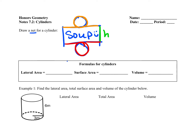The nice thing about cylinders is that they have all the same formulas as prisms. The lateral area for a cylinder is perimeter of the base times the height. Surface area is that lateral area plus the area of two bases. Volume is area of the base times the height. Since our base is a circle, the perimeter uses circumference — pi times diameter — and the area of the base is pi r squared.